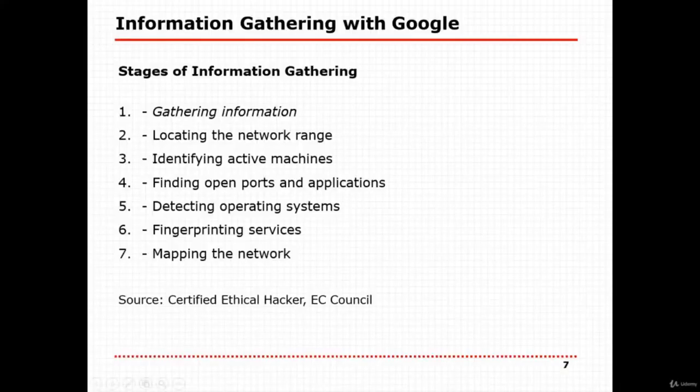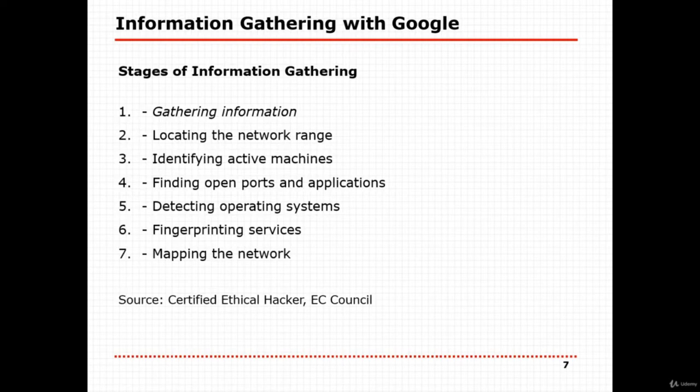The stages of information gathering using Google include: gathering information, locating the network range, identifying active machines, finding open ports and applications, detecting operating systems, fingerprinting services, and mapping the network. We'll use Google dark search operators for these tasks.